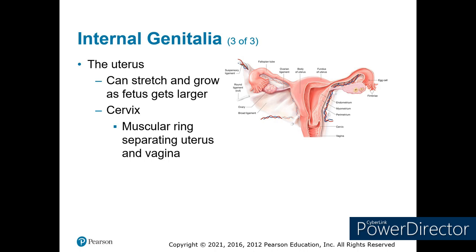As the fetus gets larger, the uterus takes over more and more of the abdominal cavity, causing discomfort and other symptoms. To keep the fetus inside the uterus, we have the cervix — a muscular ring that keeps everything tight and secure in the uterus until delivery is imminent.